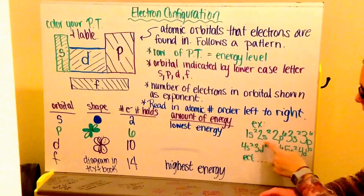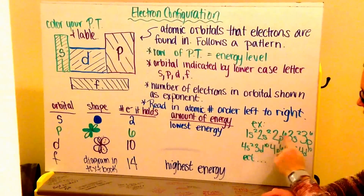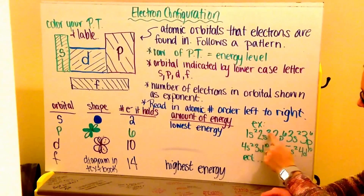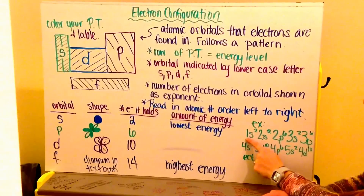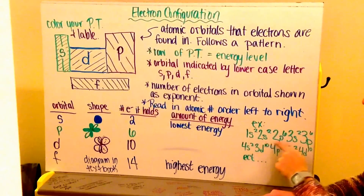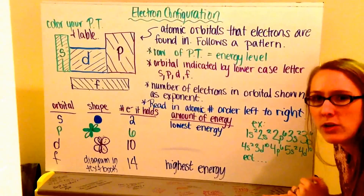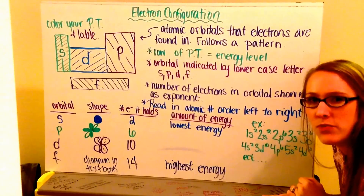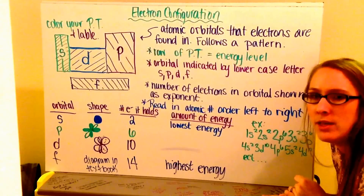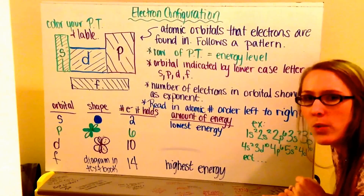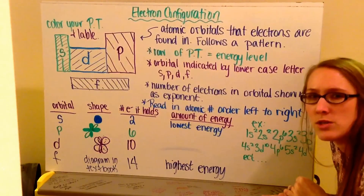Notice that there are no commas in between, that my number of electrons in each orbital is raised like an exponent, and my energy level is a big number up front, also known as a coefficient. This pattern needs to be followed for all electron configurations. Next, when I walk you through many examples of electron configurations on the periodic table, you need to try to write down these electron configurations. Once I've gone through it, I will show a picture of what the electron configurations will look like.